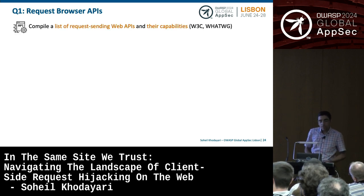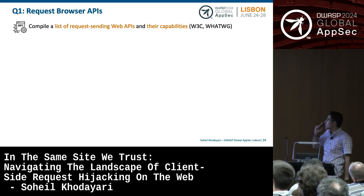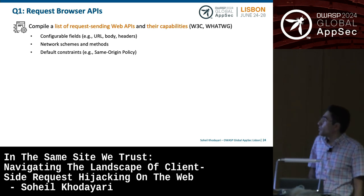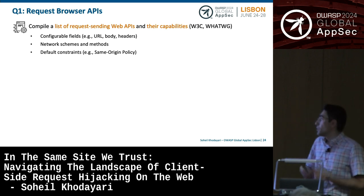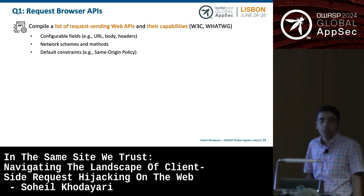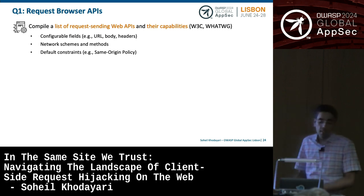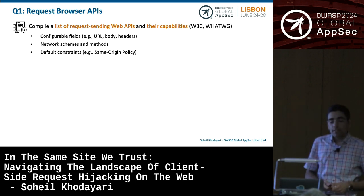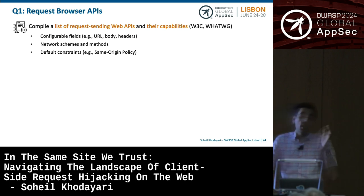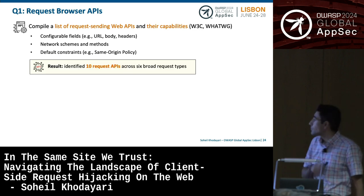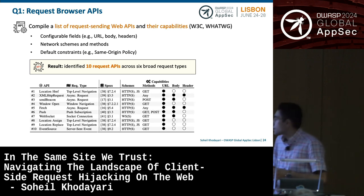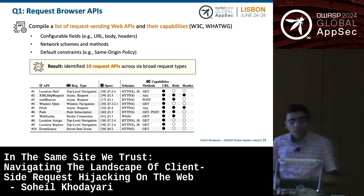Starting with the first question, we compiled the list of request-sending APIs from W3C and WHATWG standards. We looked at configurable fields for each API — URL, body, headers — the network schemes and methods (POST, GET, PUT, HTTP, JavaScript scheme), and the default constraints these APIs are subject to. For instance, most APIs are subject to same-origin policy and same-site cookies, but WebSockets are exempted from same-origin policy. We identified 10 request APIs across six different request categories, examining their capabilities and the security impact when an attacker controls one or more inputs.